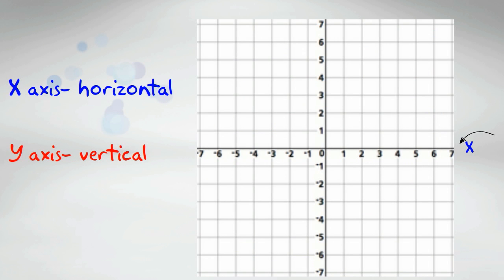Here you see a coordinate grid. The coordinate grid is made up of an x-axis, which is a horizontal line noted in blue, and a y-axis, which is a vertical line noted in red.